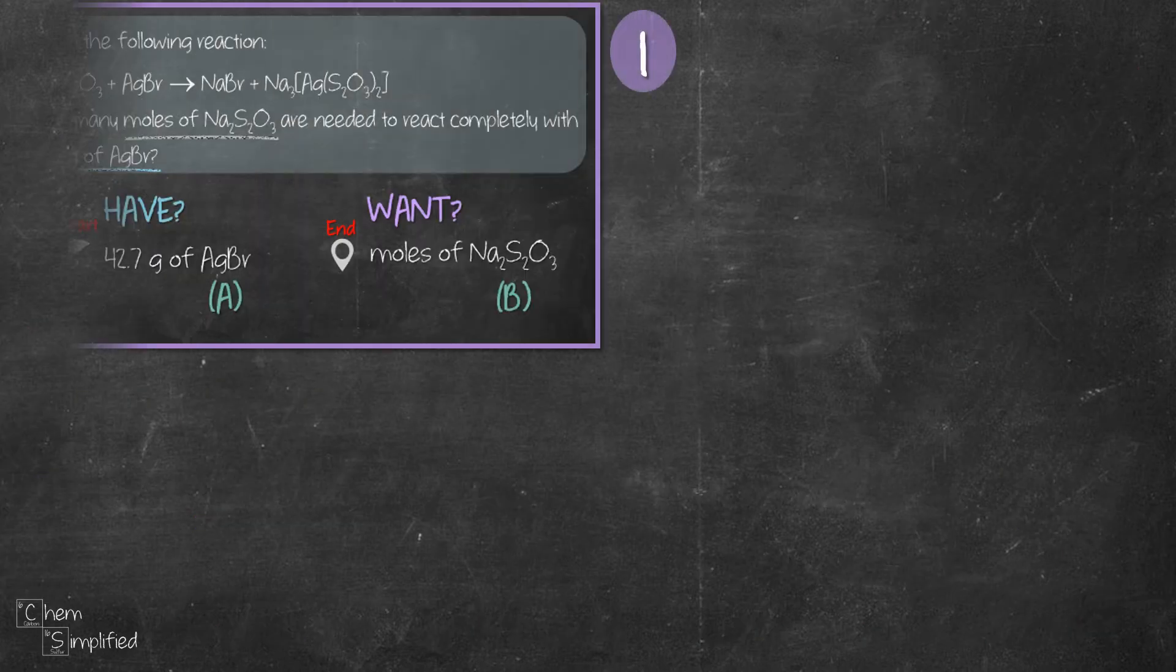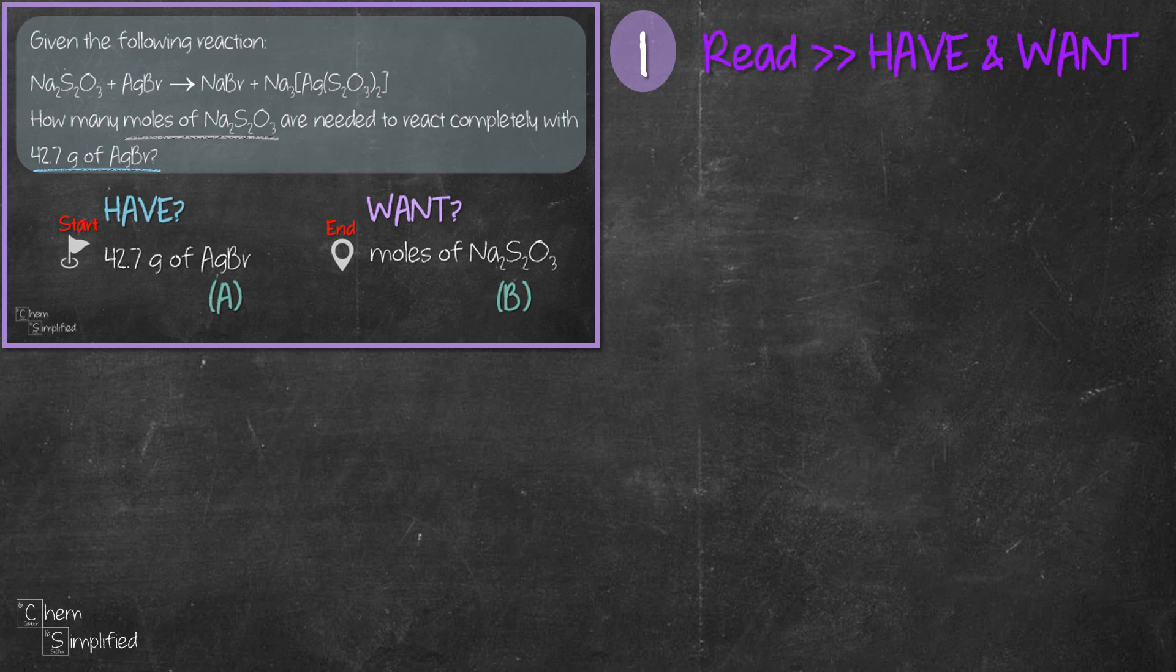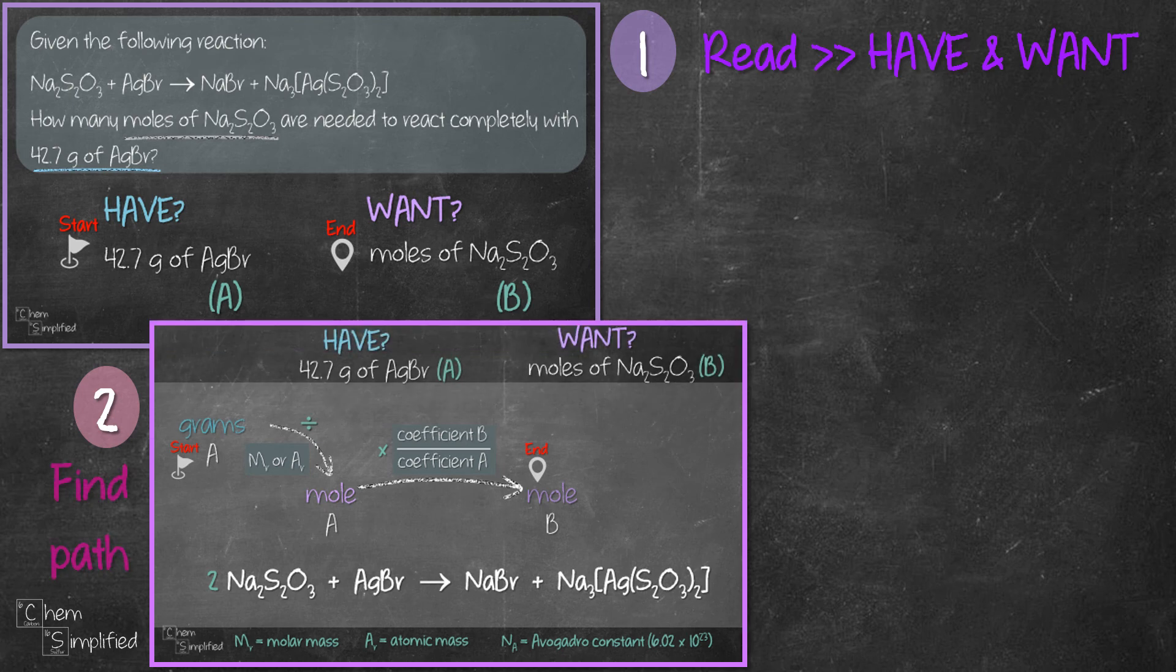To recap, we start off by reading the question and figuring out the information we have and what the question wants. Then we figure out the pathway using the plan. Before we proceed, if the question involves two substances A and B, then we need to make sure that our equation is balanced.